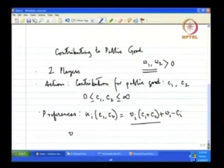V_i tells me what benefit player i is getting out of that total amount of public good. In particular, if C1 + C2 is high, more public good will be created and V_i will be high. So I can safely assume that V_i is an increasing function — V_i prime is positive. That is a reasonable assumption to make.